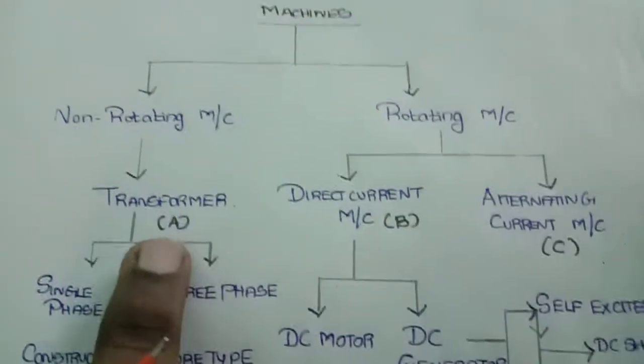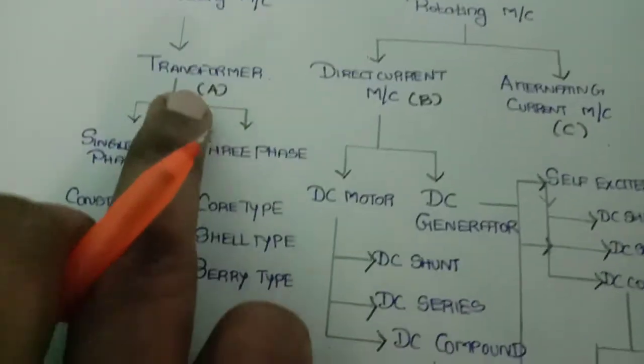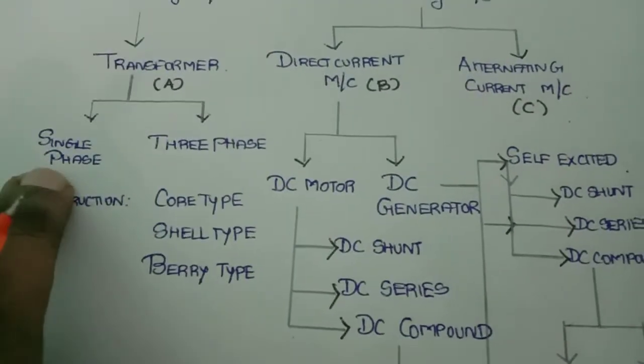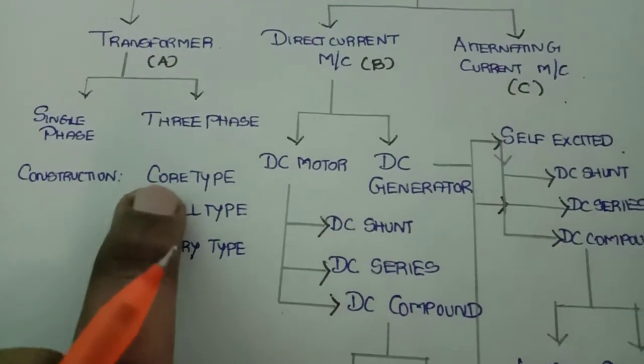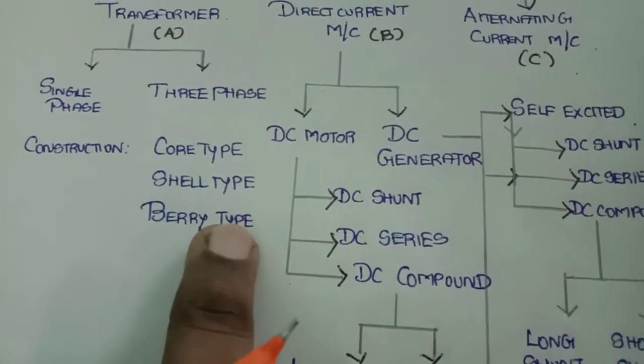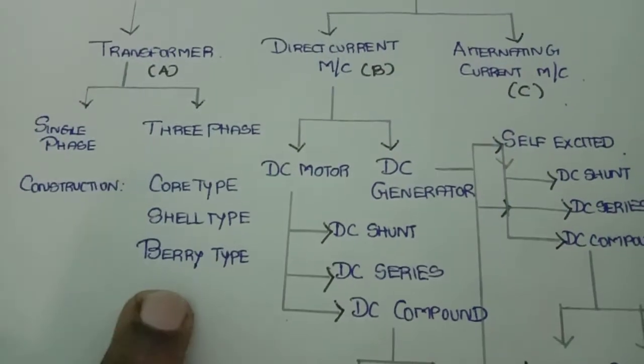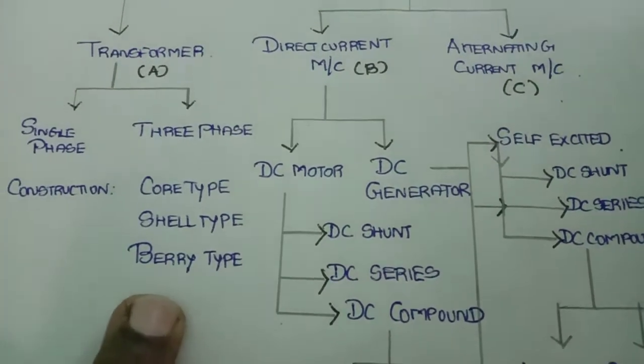For understanding, I have mentioned A, B and C. In the transformer category, we can classify transformers into single phase and three phase. Based on construction arrangements, we can say core type transformer, shell type transformer, and berry type transformer. These topics will be discussed in detail in further lectures.